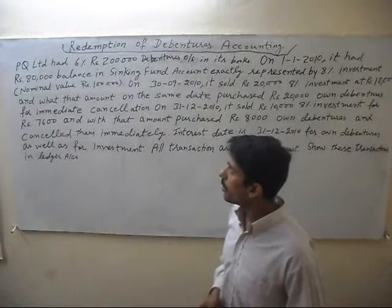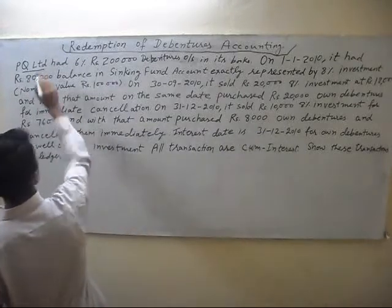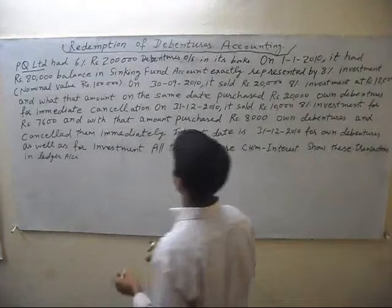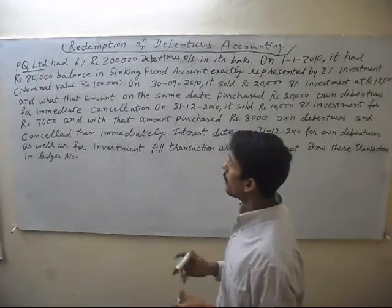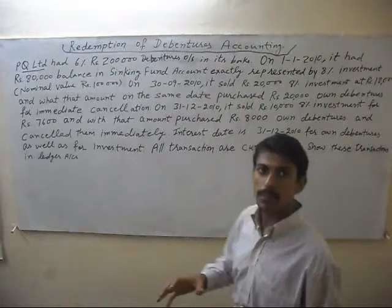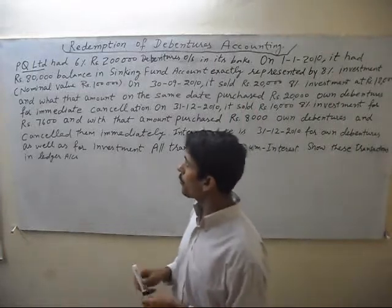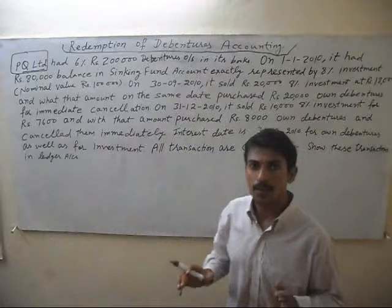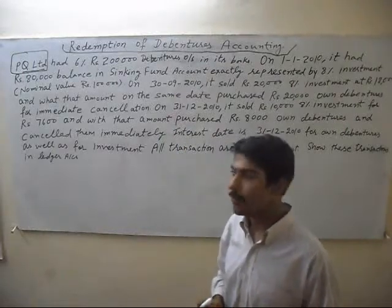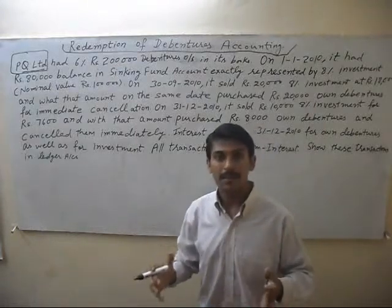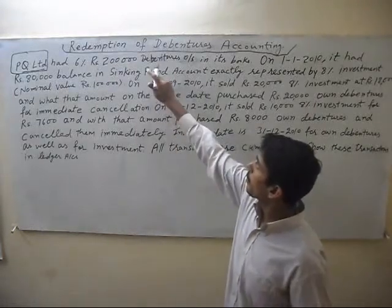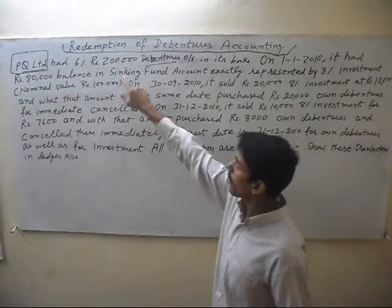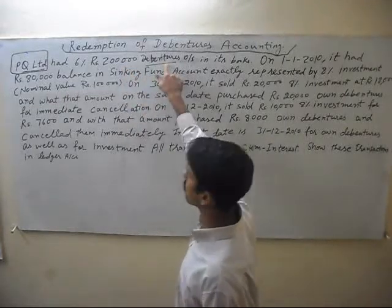In this question, we have a company which gets 2 lakh rupees debentures from debenture holders. We will see the business of PQ. PQ is a good company doing business and wants to earn profit from this debenture sale and purchase business. In the books, the company has 2 lakh rupees debentures, which means it is a liability.